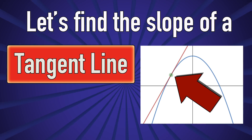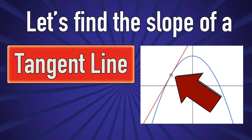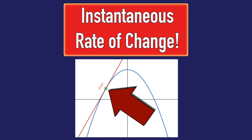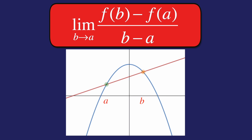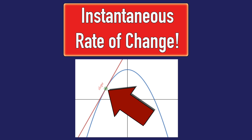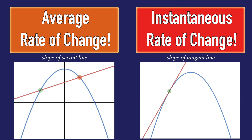Let's find the slope of a tangent line. The math is not that strange — instantaneous rate of change. The limit of the average rate of change as b goes to a. Instantaneous rate of change.